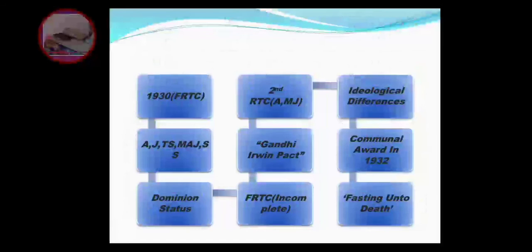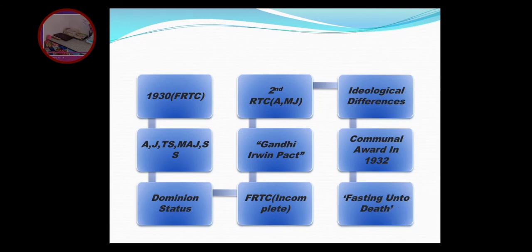In the First Round Table Conference, Gandhiji, Ambedkar, and Muhammad Ali Jinnah participated. Some issues started between Gandhiji and Ambedkar. Ambedkar said Dalits should get each and every opportunity, but Gandhiji said they would get opportunities but not 100 percent. Ambedkar felt sad and came out. Then the Gandhi-Irwin Pact happened. In the Second Round Table Conference, Ambedkar didn't come again and the Indian National Congress also didn't participate.